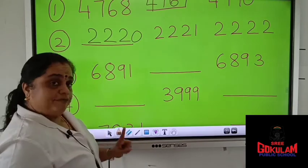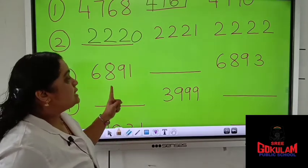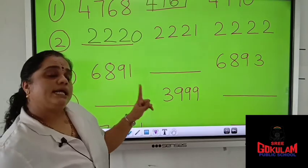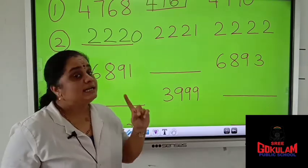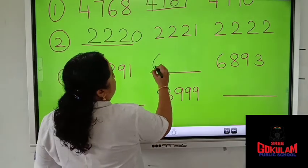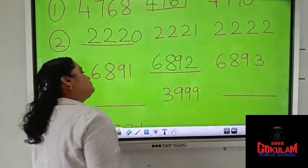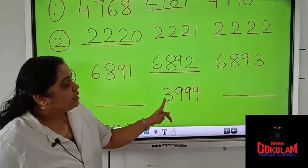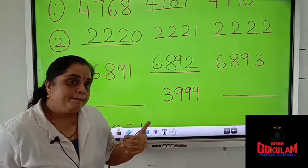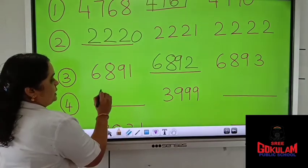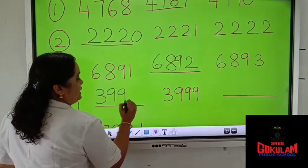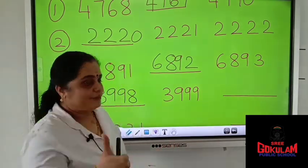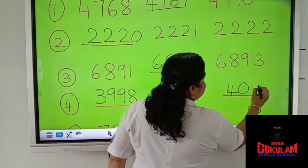Which number will come after 6,891? That means successor — which number will come after 6,891? 6,892. Now the fourth question: before 3,999, which number will come? 3,998. And after 3,999, which number should come? 4,000.